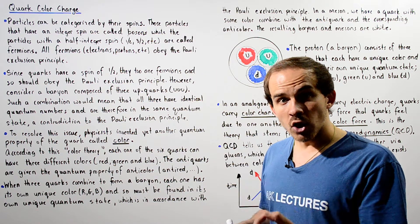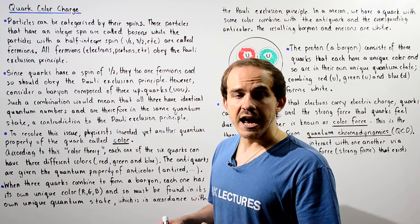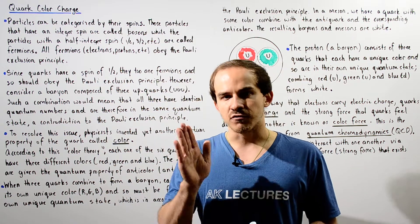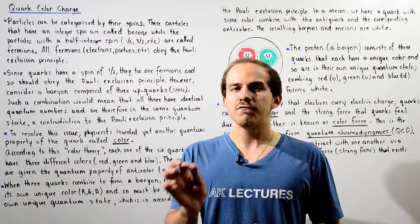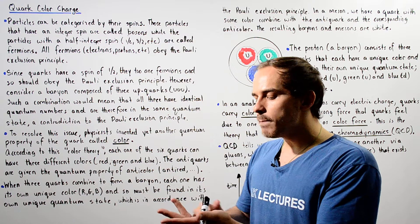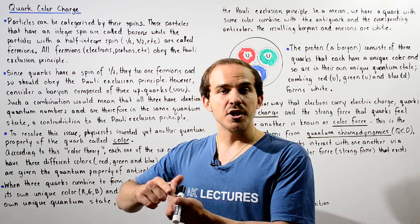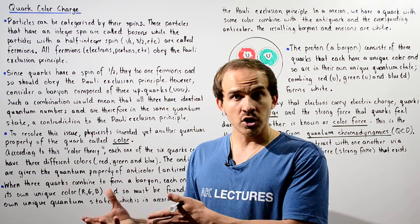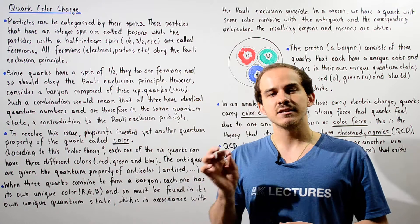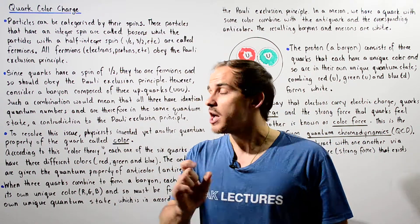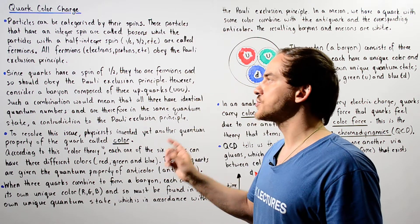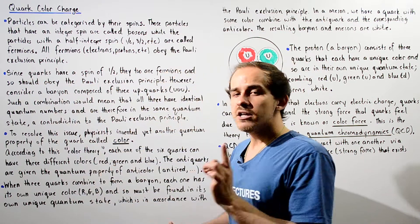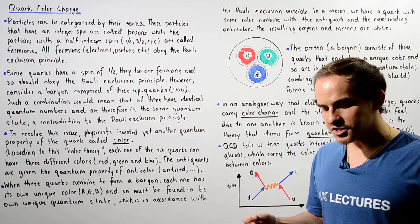Now, a quark is also considered a fermion because all six different types of quarks have a spin of one-half. So the up and the down, the top and the bottom, and the strange and the charm quarks — all these quarks have a spin of positive one-half. And that means, by definition, the quarks are fermions, and so they must obey the Pauli exclusion principle.